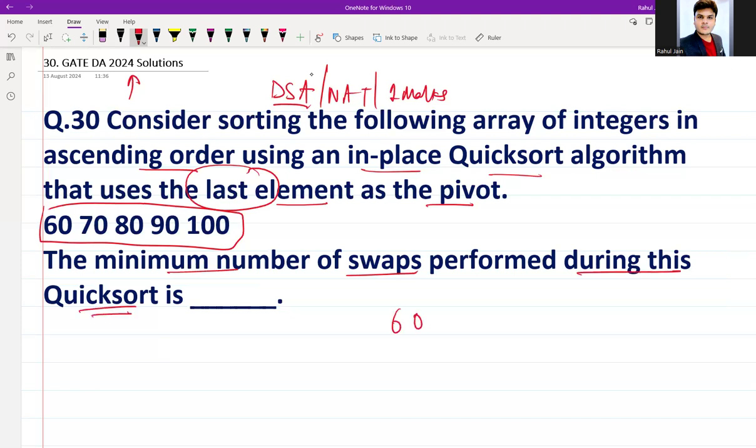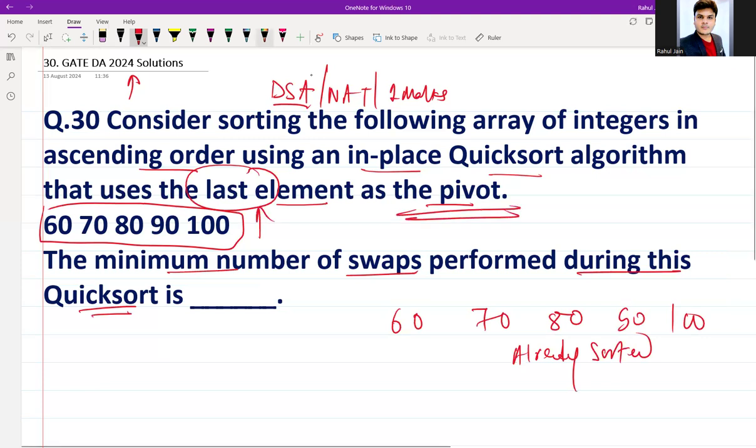You see here the sequence is 60, 70, 80, 90, and 100, and it is already sorted. This particular sequence is already sorted. What they are saying is choose the last element as pivot, so if I am going to choose the last element as a pivot...